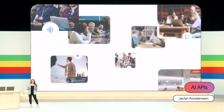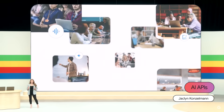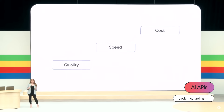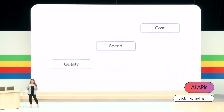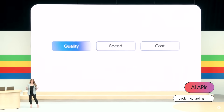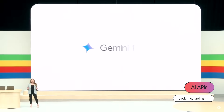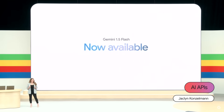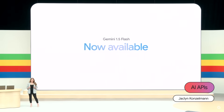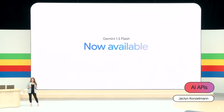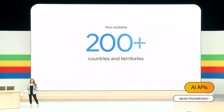And as you heard about earlier today, selecting the right AI model for your needs requires a balance across quality, cost, and speed. That's why I'm thrilled that Gemini 1.5 Flash is officially open to all developers to start building with today. You can get started using the Gemini API in Google AI Studio, which is now available in more than 200 countries and territories.